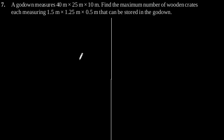Exercise 13.5, Question Number 7. A godown measures 40m × 25m × 10m. Find the maximum number of wooden crates, each measuring 1.5m × 1.25m × 0.5m, that can be stored in the godown.